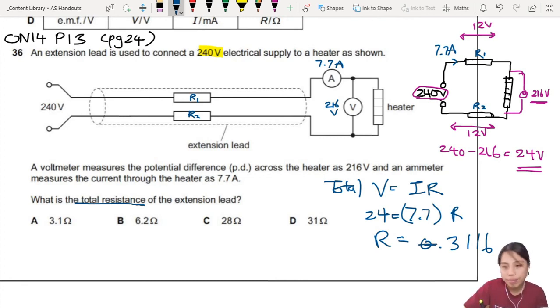3.116 ohm. Look, look, look, 3.1. Wow, this one's very tricky. They put 31, so if you type the wrong decimal like me, then it's wrong already. So here, 3.1.